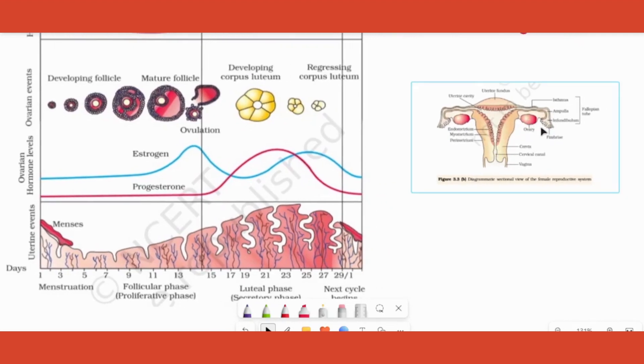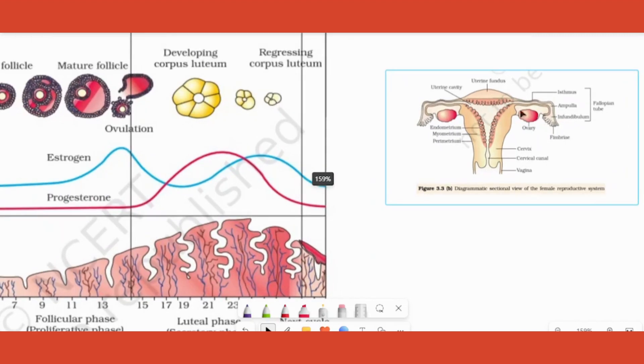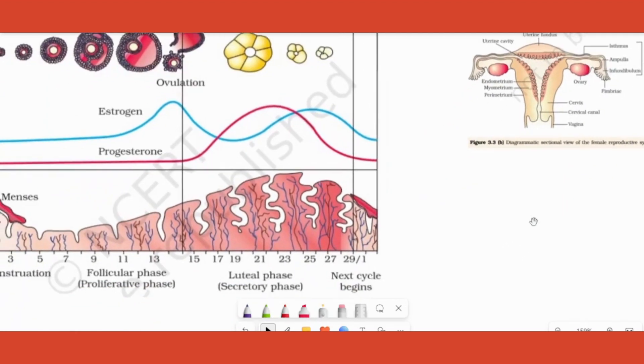Once ovulation happens, what does ovum do? It starts traveling towards the oviduct. It waits there for the sperm. Now if it did meet up with the sperm, fertilization occurs. If it doesn't meet up with the sperm, it needs to come out.